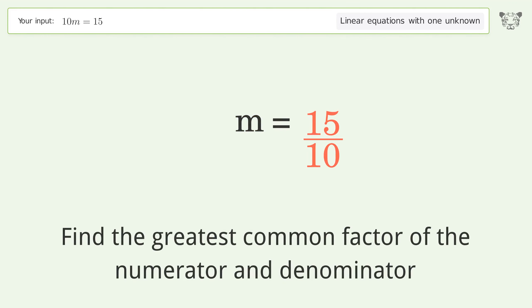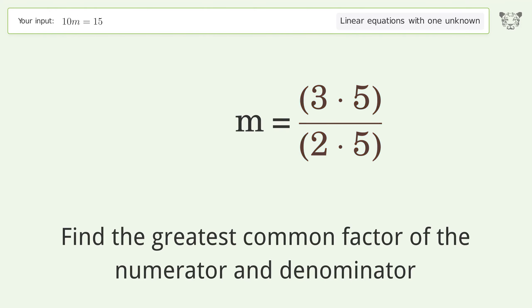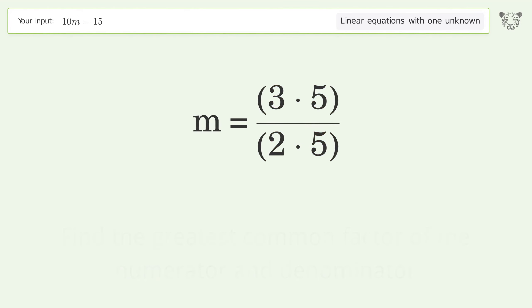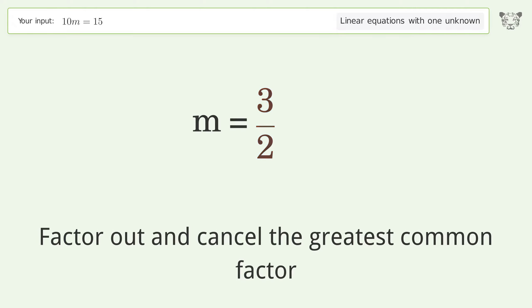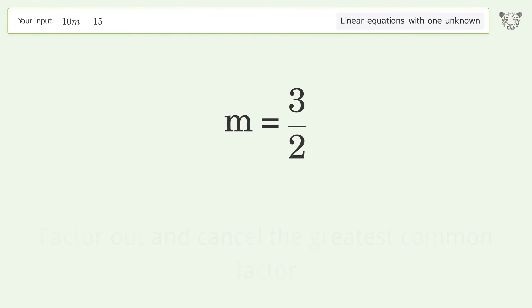Find the greatest common factor of the numerator and denominator, then factor out and cancel the greatest common factor. And so the final result is m equals 3 over 2.